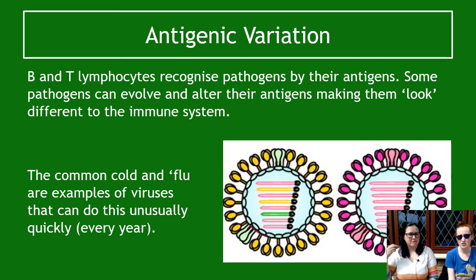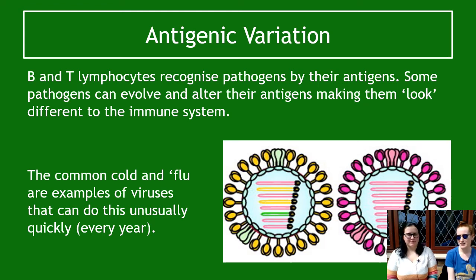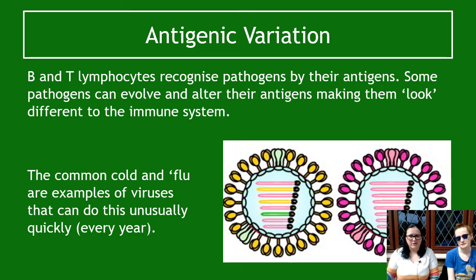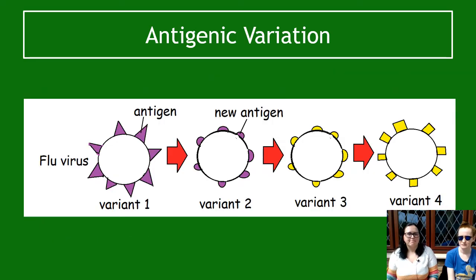These two pictures show the same pathogen but over different years, and you can clearly see they look different. Our body might be able to recognize the one on the left and know how to deal with it, but then the second version appears with antigenic variation that has modified its antigens. Now we can't recognize it and can't fight it off. The immune system has to start from scratch — first infection, then matching a B lymphocyte, then cloning it, and it takes time, so you get sick.